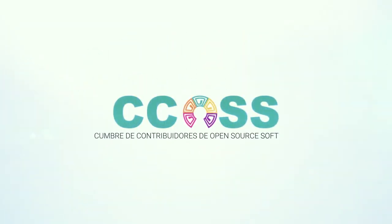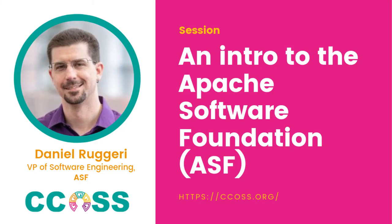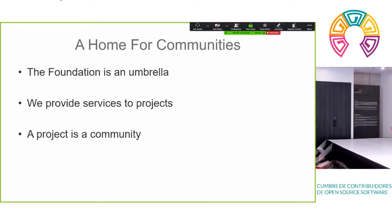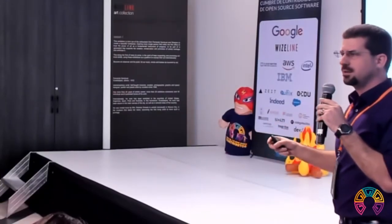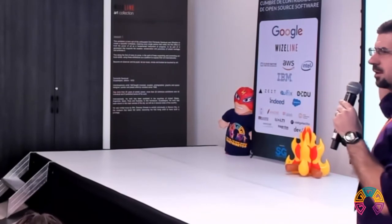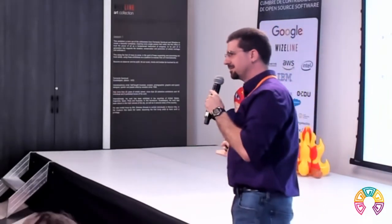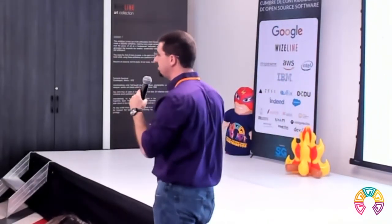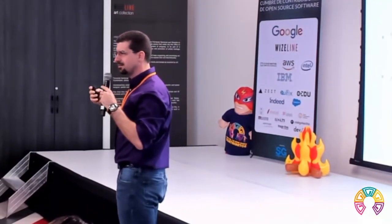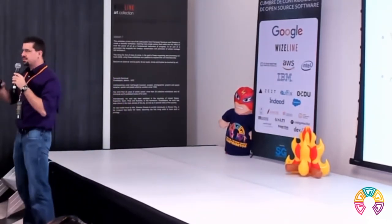What is the ASF? The best way to describe it is to think of us as an umbrella — we are a collection of projects, we provide services for those projects. The foundation exists so the developers, the people, can do what they want to do. Legal and trademark protection, fundraising — these are services the foundation provides so the projects can do their thing.